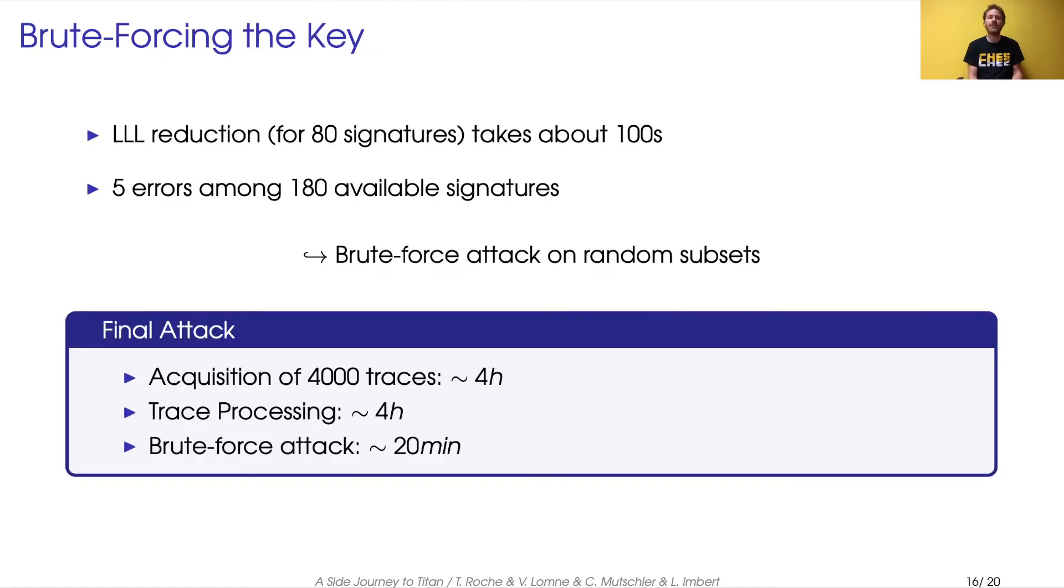Doing so, we still had five erroneous nonces inside this 180 available. But we knew that LLL could make the attack work with only 80 signatures. So we brute force the attack on a random subset of 80 signatures inside the 180 we had. And we finally recovered the secret key.